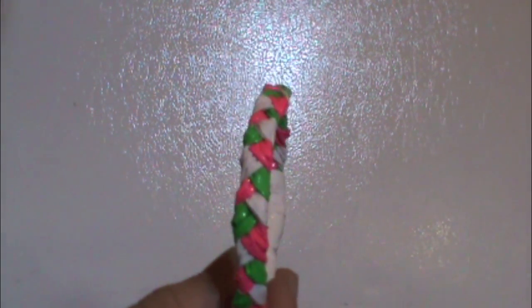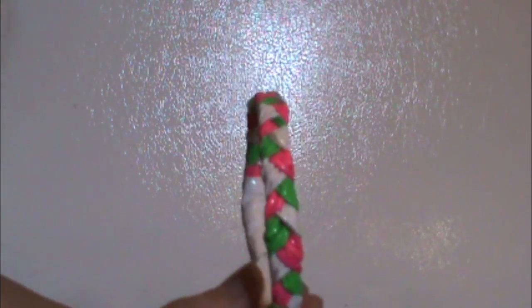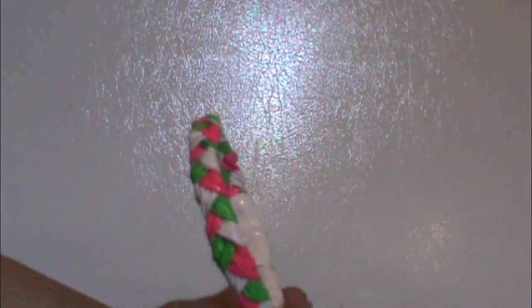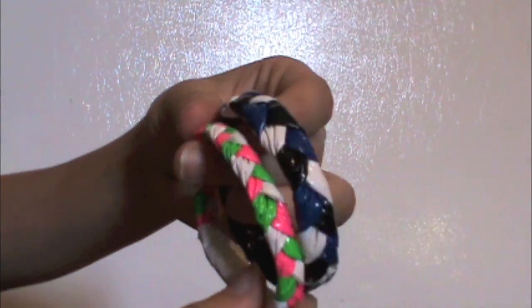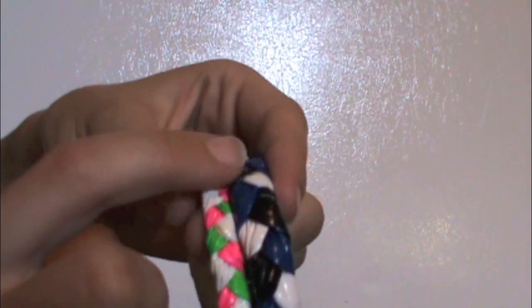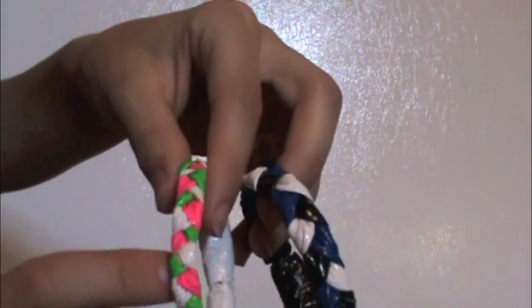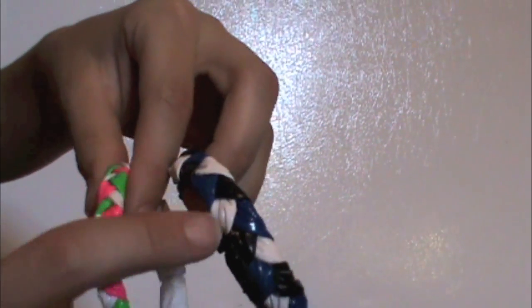And this one is pink, lime green, and white bracelet. And I don't know if you can tell, but it's a lot smaller. Like the width of the braid is a lot smaller than this one. And I wanted to get your opinion on which one do you like better. Do you like the smaller braid or the bigger braid?